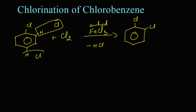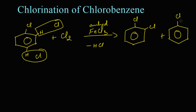If the reaction takes place in the para position, a chlorine from the chlorine molecule and the hydrogen in the para position will leave as HCl, and we get para dichlorobenzene with Cl and Cl. Here the reaction does not take place in the meta position.